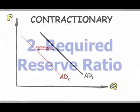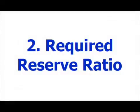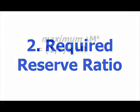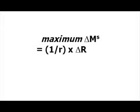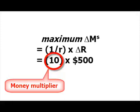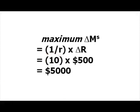The second tool is the required reserve ratio. The maximum change in checkable deposits, and therefore the money supply, is 1 over the required reserve ratio times the initial change in reserves. For example, if the change in reserves is $500 and the required reserve ratio — the percentage of total deposits that the bank is legally required to hold onto — is 10%, then the maximum change in the money supply is 1 over 0.1 times 500, or 10 (the money multiplier) times 500, or $5,000.